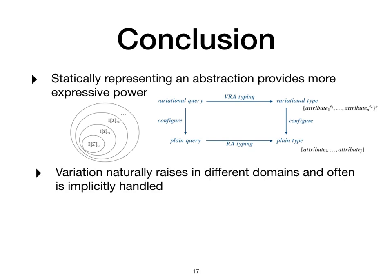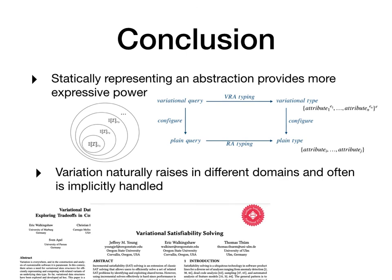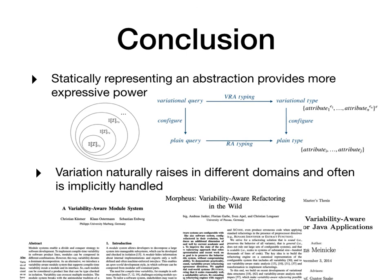The second point is that variation naturally arises in different domains and often is implicitly handled. Recently, there has been lots of efforts to explicitly and systematically handle variation, such as work on variational data structures, variational SAT solvers, variational parsers and interpreters and so on. Thank you. I'd be happy to take your questions now.